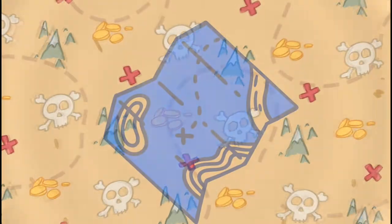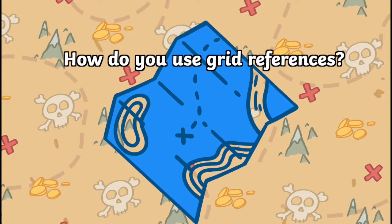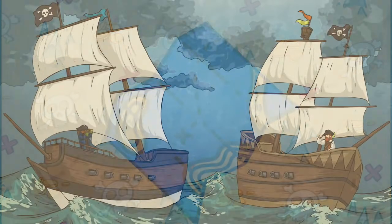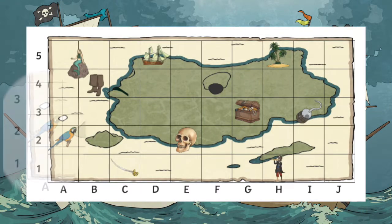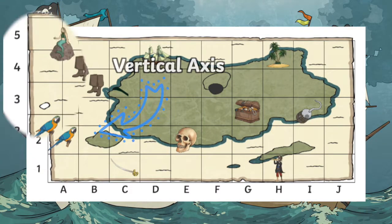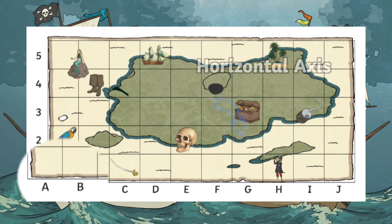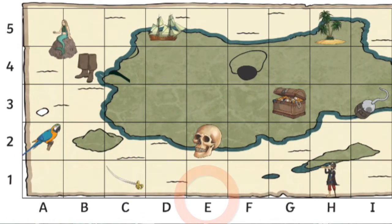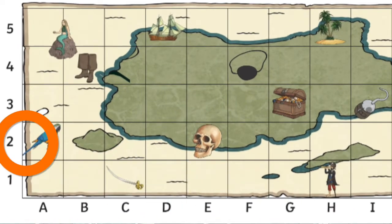If you're unsure how to use the grids, let's take a look together. The vertical axis of a map are labelled with numbers and the horizontal axis is labelled with letters. Both the letters and the numbers are written between the lines of the grid, not on the lines.